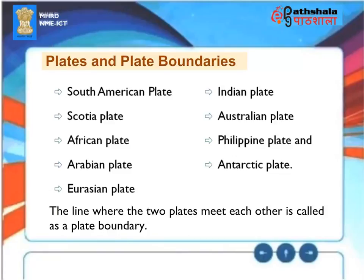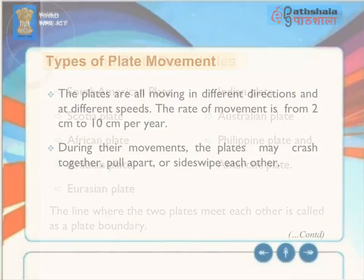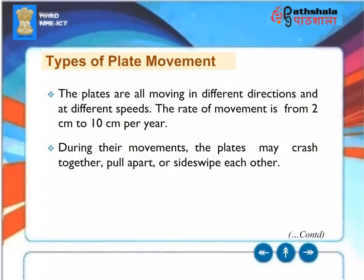The line where two plates meet each other is called a plate boundary. The plates are all moving in different directions and at different speeds — the rate of movement is from 2 cm to 10 cm per year. During their movements, the plates may crash together, pull apart, or side-swipe each other.